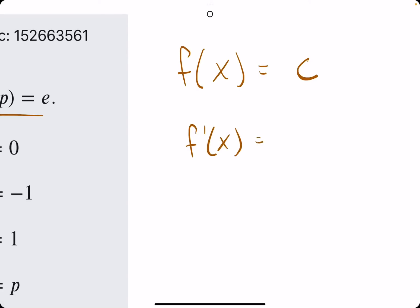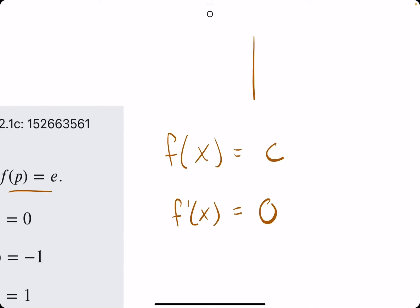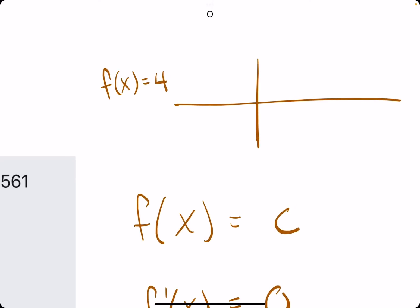And we can think about it in terms of a graph. If we have the graph of any constant, say we have f of x equals 4, what that would be is a line, a horizontal line, at the y value of 4.